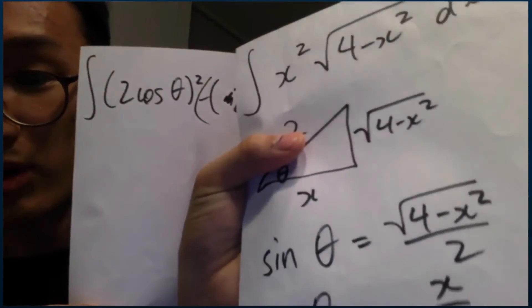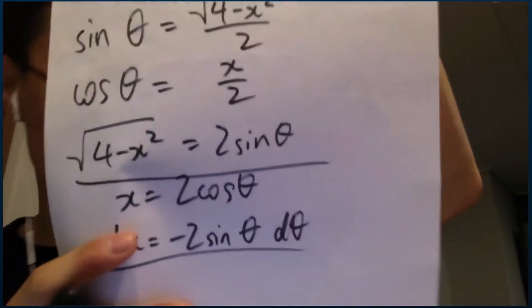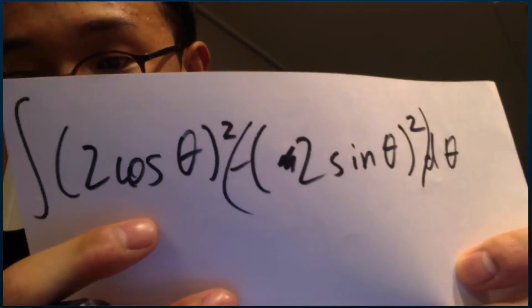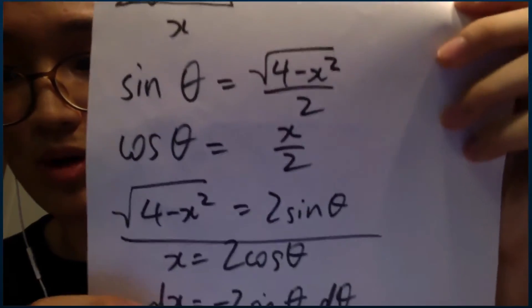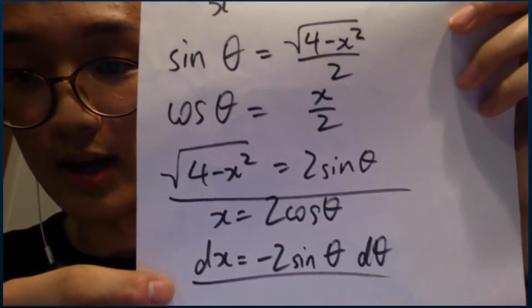So we'll get the following integral. Because if you look back here, you can see that the x squared is simply going to become 2 times cosine theta squared, which we can see here. And then if we go back here, we know the square root of 4 minus x squared is just equal to sine theta, and dx is equal to negative 2 sine theta times d theta.